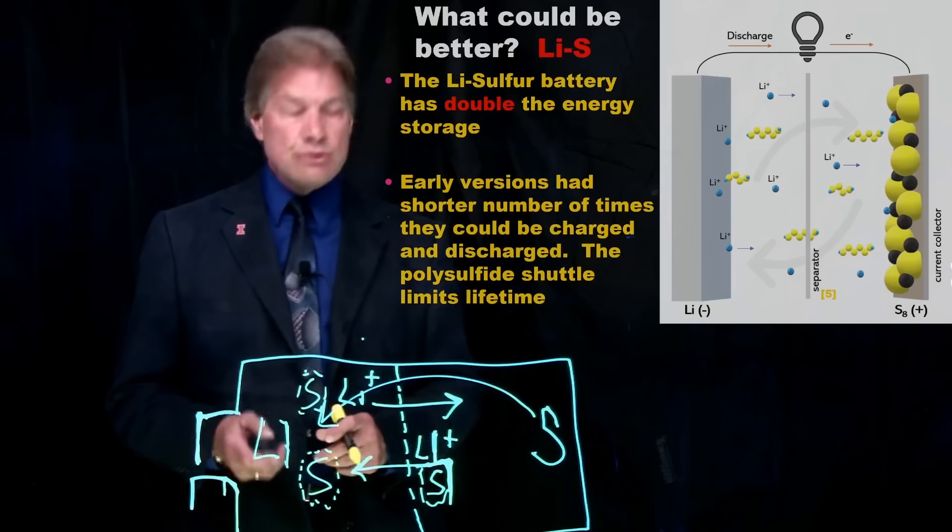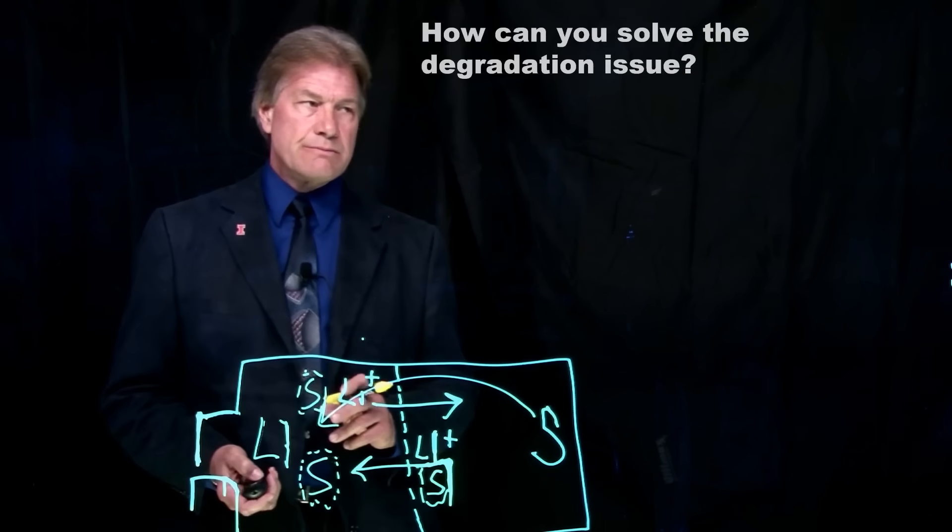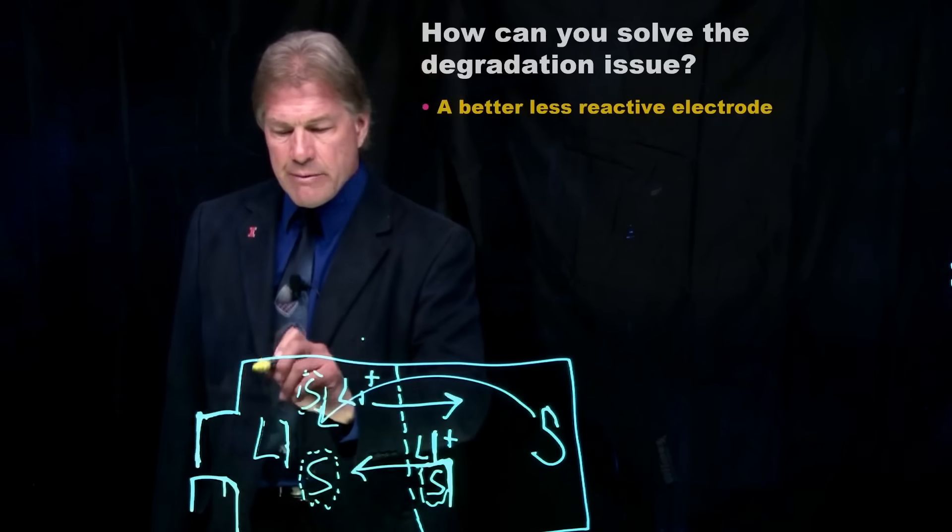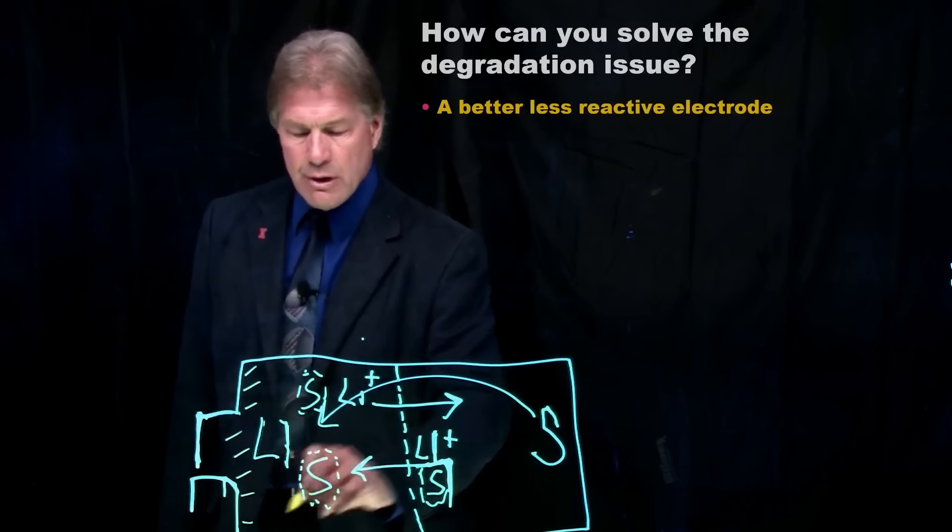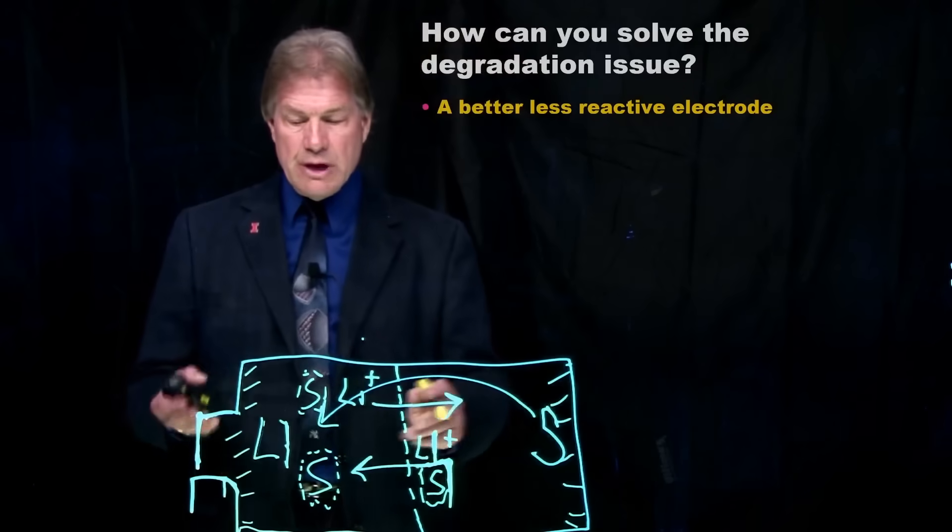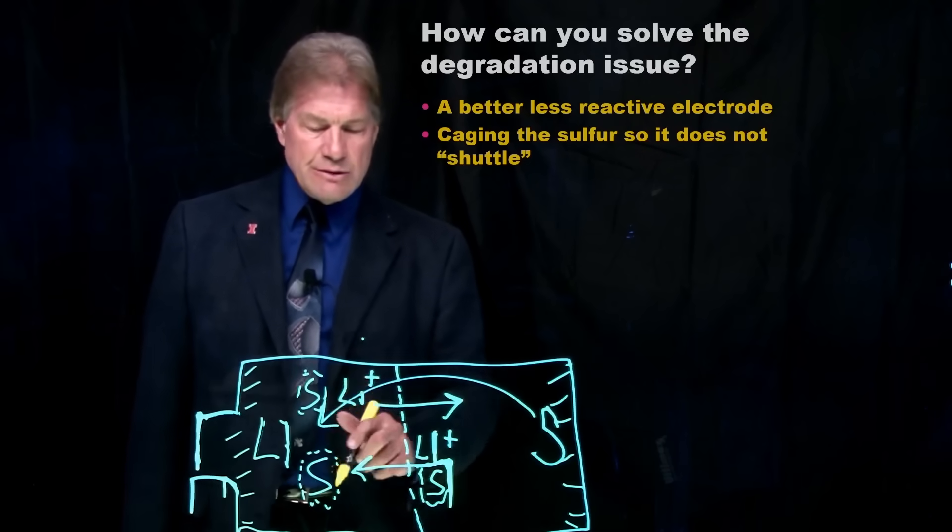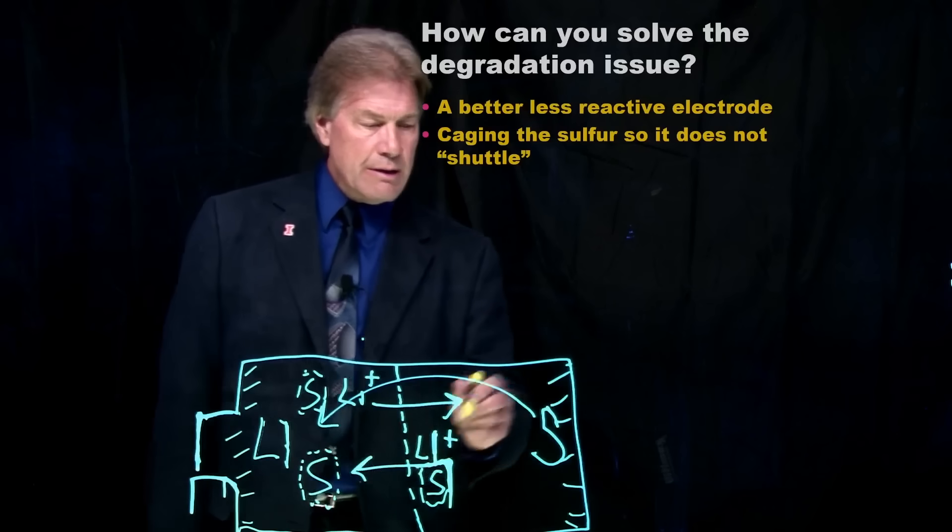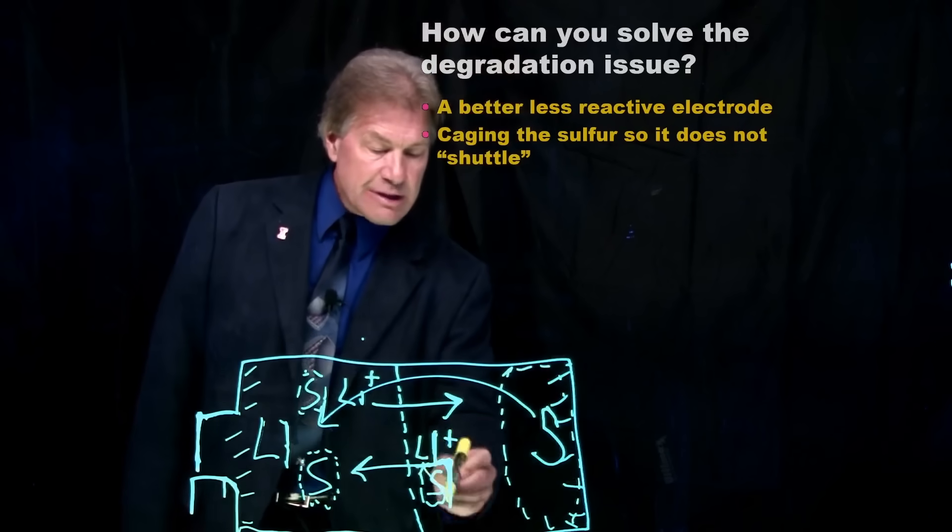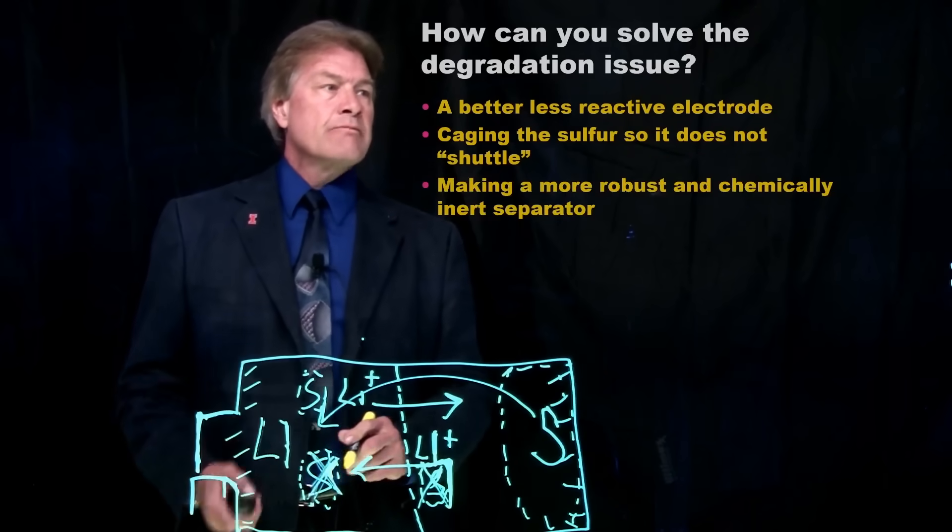So, what can we do about it? How can you solve these degradation issues? Well, one is you need something less reactive. So, maybe we can put in a more inert material around the electrodes. Because things around the electrodes mean you won't end up with the corrosion and those types of issues. What else you need is you need to do something to stop this sulfur from migrating. Maybe we can put some kind of cage, some kind of system around the sulfur so that the sulfur doesn't move across. So, we beat the polysulfide shuffle.